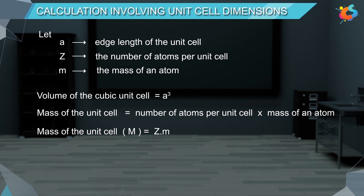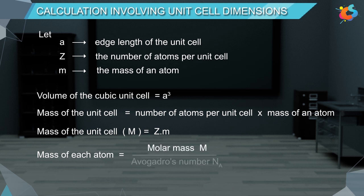If M is the molar mass of the element, then the mass of one atom M is equal to the molar mass M divided by Avogadro's number Na.